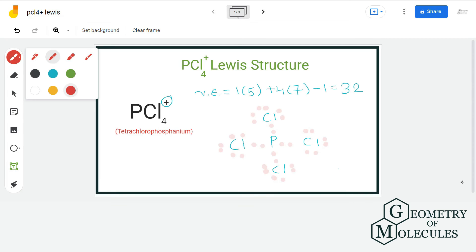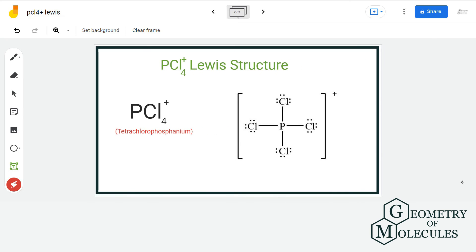Also, PCl4 plus is an ion, so we will enclose it within a bracket. Now all the atoms have complete outer shell in this Lewis structure and this is the final Lewis structure of PCl4 ion.